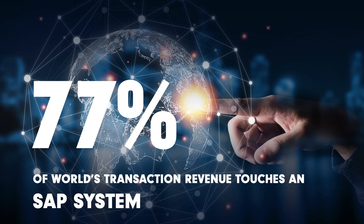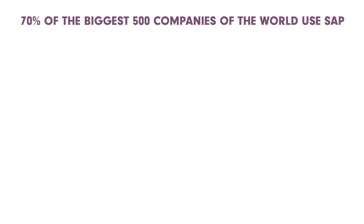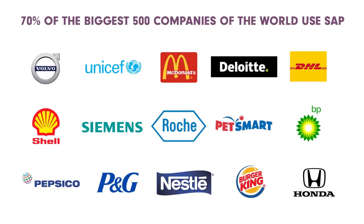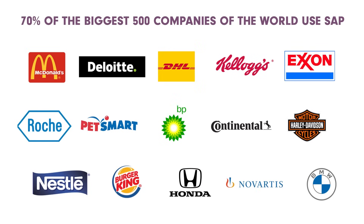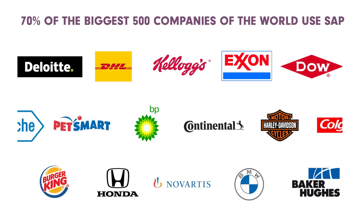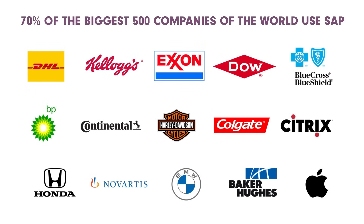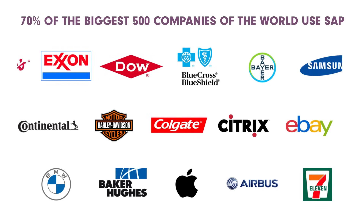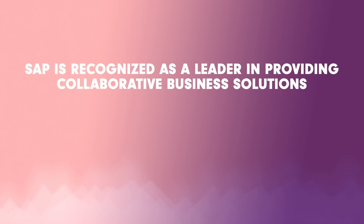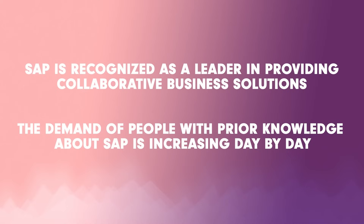Here are just a few examples of companies that work with SAP: BMW, Volvo, Coca-Cola, 7-Eleven, DHL, Ford, Burger King, Samsung, Apple, McDonald's, and Harley Davidson. 70% of the biggest 500 companies in the world use SAP. SAP is recognized as a leader in providing collaborative business solutions, and the demand for people with prior knowledge of SAP is increasing day by day.